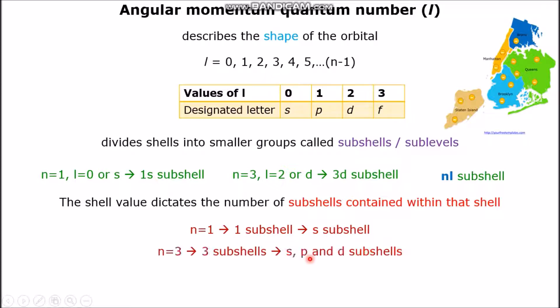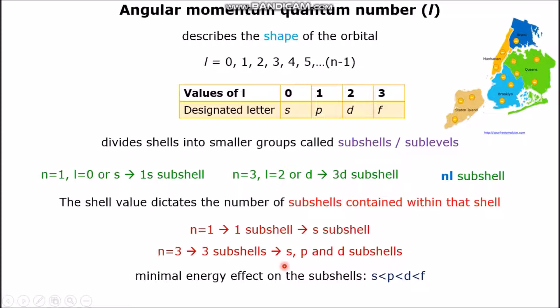In the third electron shell, only three sub-shells can be contained, that is the S, P, and D sub-shells, and so forth. As far as energy is concerned, there is minimal energy difference on the sub-shells, but sub-shell S has the lowest energy of all the sub-shells. F has the highest energy. As the value of L increases, the energy of the sub-shell increases as well.